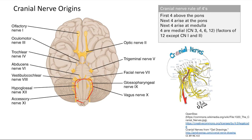The other rule of four is that four of them are medial. These are all factors of 12 except for cranial nerve 1 and 2. So cranial nerve 3, cranial nerve 4, cranial nerve 6, and cranial nerve 12 are all medial. This will be significant later on.